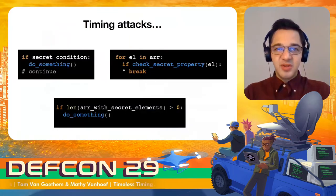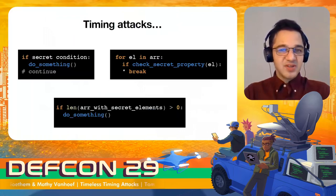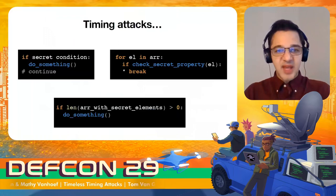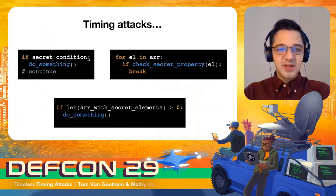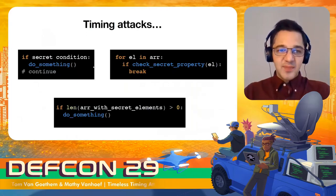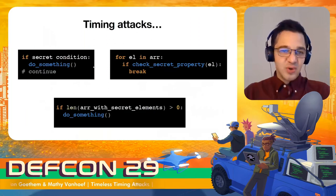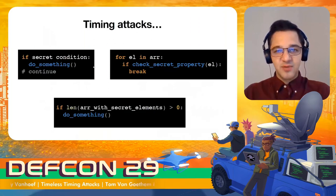In this presentation, we'll be talking about timing attacks on timing leaks. In the top left corner, we can see a straightforward timing leak where, depending on some secret condition, extra computation is performed. The execution time — and also the response time of, for instance, the web application — will leak whether the condition was true or false.